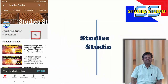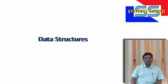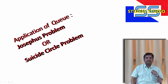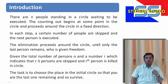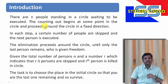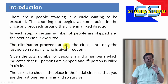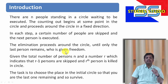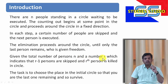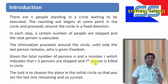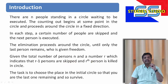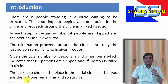Let us come directly to the objective of the problem. There are N people standing in a circle waiting to be executed. The counting begins at some point in the circle and proceeds around the circle in a fixed direction. In each step, a certain number of people are skipped and the next person is executed. The elimination process continues around the circle until only one last person remains, who is given freedom. The number R indicates that R-1 persons are skipped and the Rth person is killed. The task is to choose the place in the initial circle so that you are the last one remaining and survive.